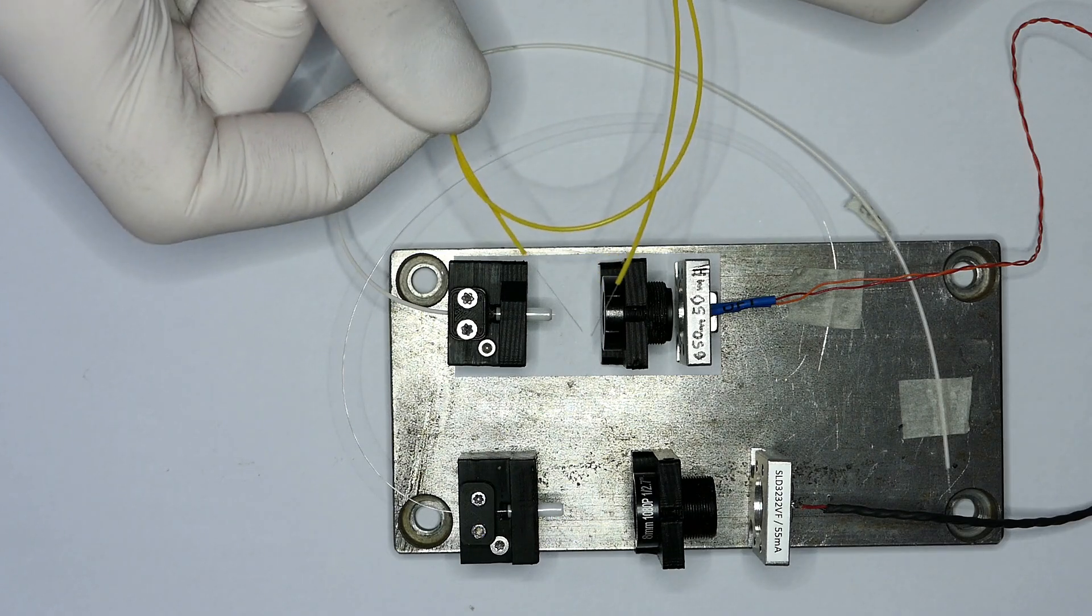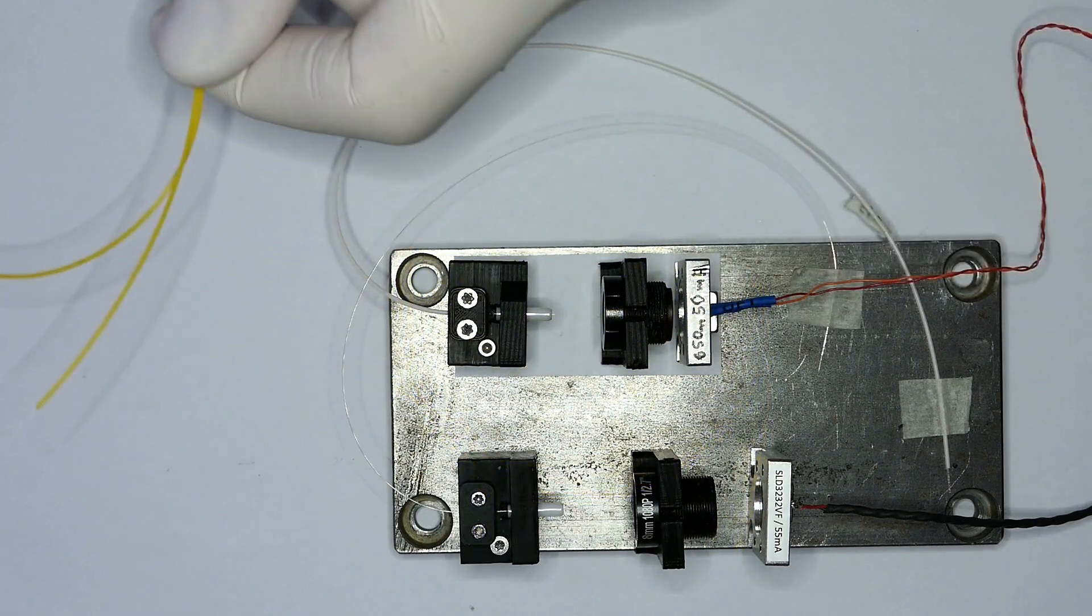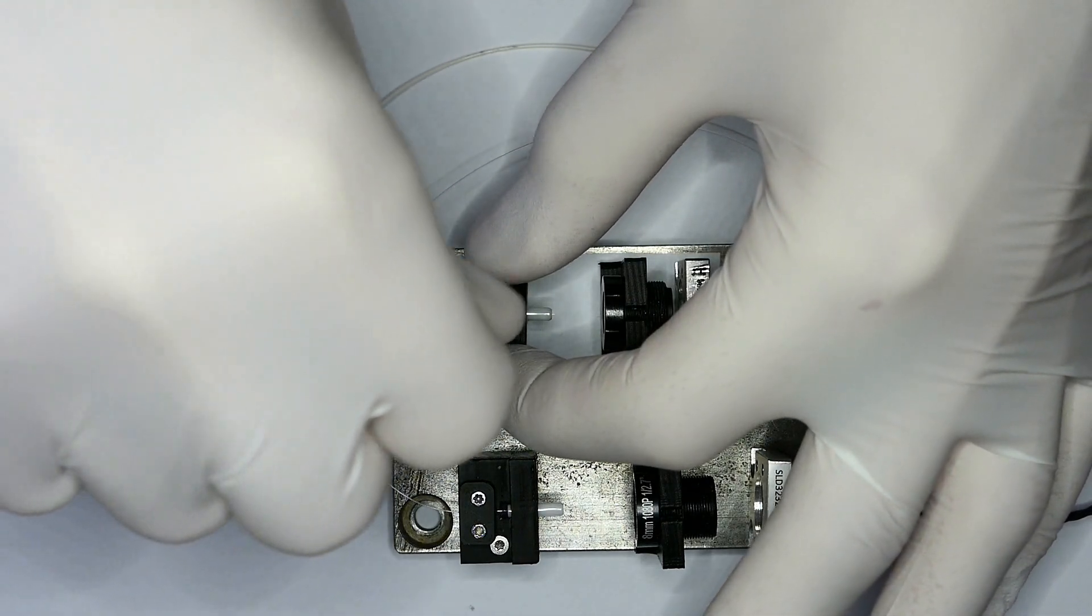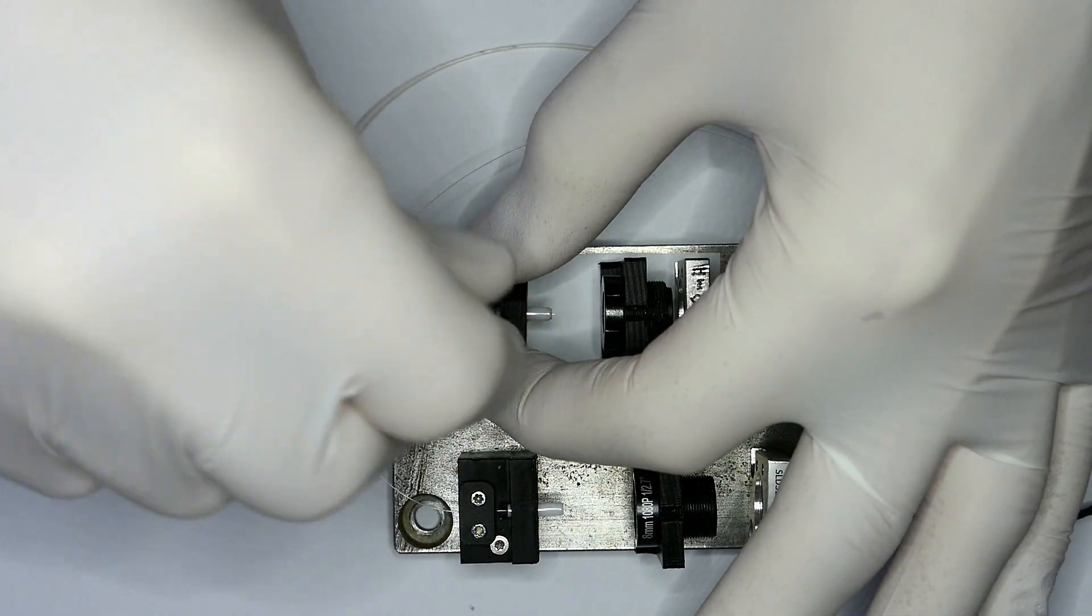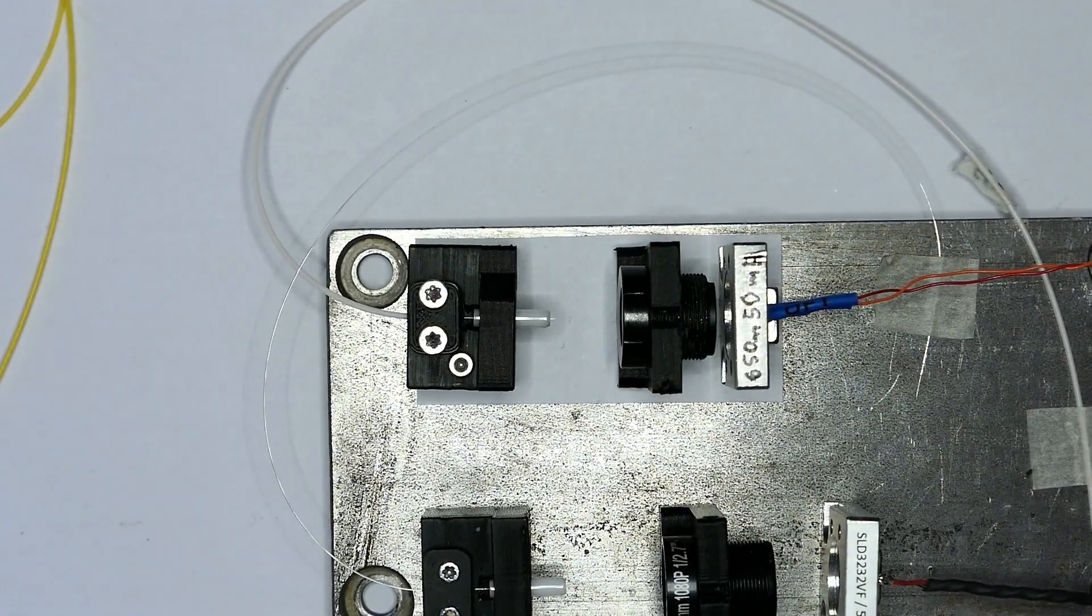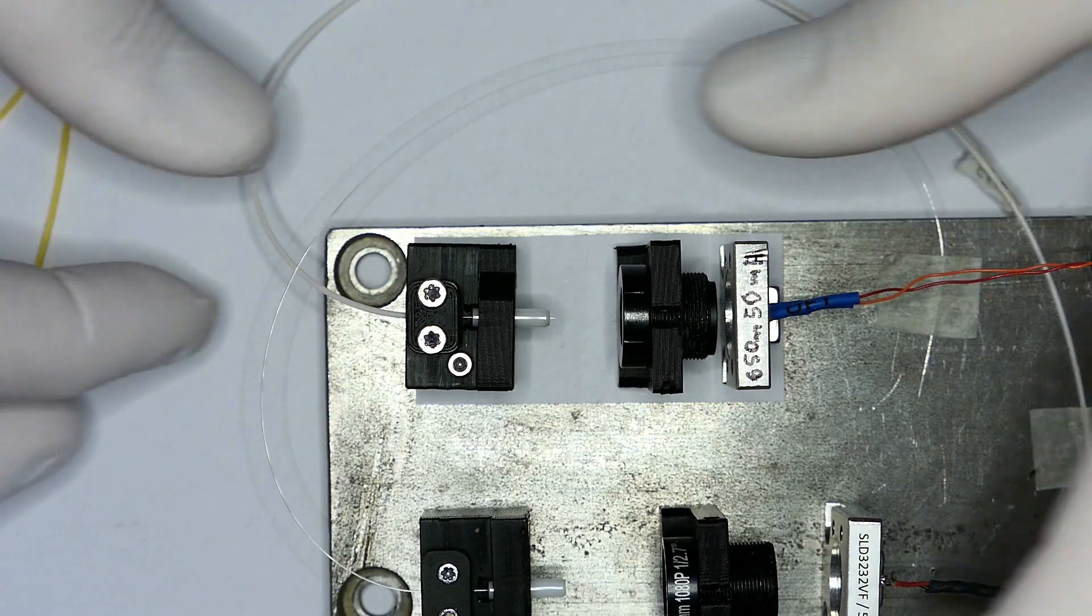Next, the multi-mode fiber is swapped for a 9-micrometer core diameter fiber. For telecommunication wavelengths, this is a single-mode fiber, however for the 650 nanometer red light used here it will carry multiple modes. Due to the smaller core diameter, it will support fewer higher order modes than the previous 50-micrometer fiber.